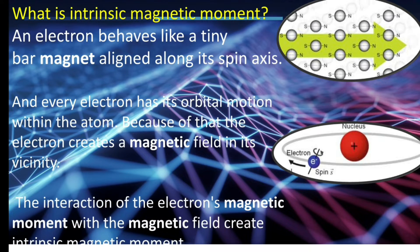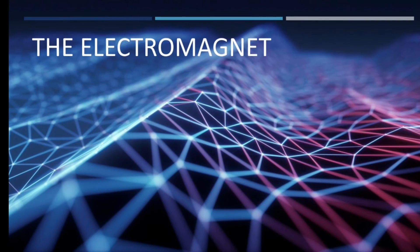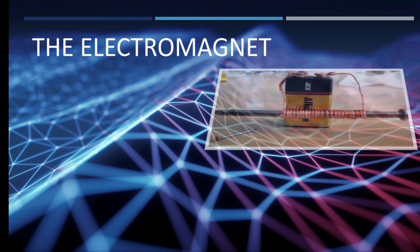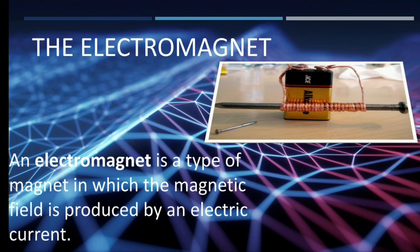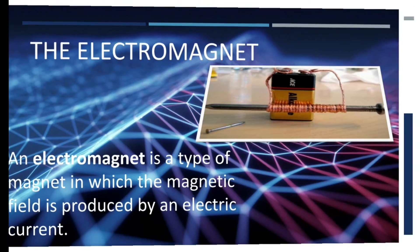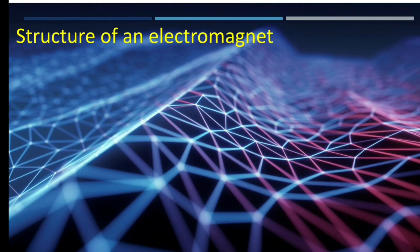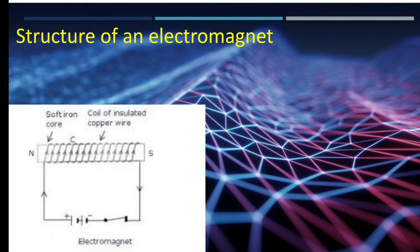The interaction of the electron's magnetic moment with the magnetic field creates an intrinsic magnetic moment, which in turn creates a magnetic field outside any magnetic material. An electromagnet is a type of magnet in which the magnetic field is produced by an electric current. Every electromagnet has two basic parts: the core and the coil.